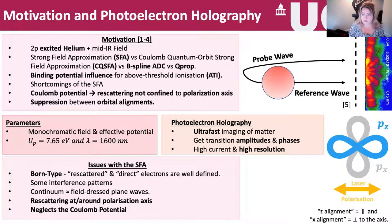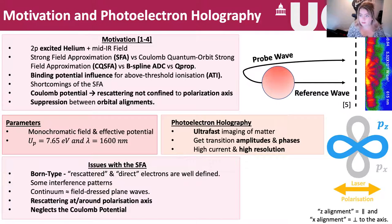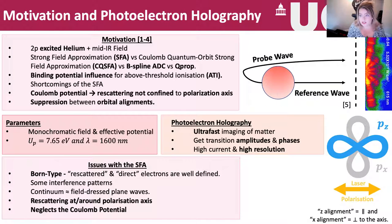Now let's look at issues with the SFA. The SFA is Born-type and therefore dictates that scattering happens either as rescattered or direct, and electrons are well-defined — but this is not the case. There are quantum interference patterns available from photoelectron holography that the SFA does not describe well. It treats the continuum and field-dressed plane waves as the same, rescattering happens only at the polarisation axis, and it neglects the Coulomb potential.